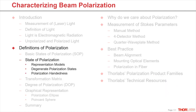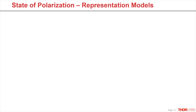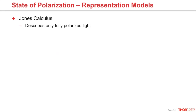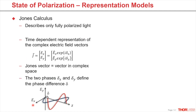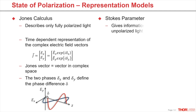Now we will look at how the state of polarization can be described in vector models. To break down the formula for the electric field over time, two methods have been established. The first is the Jones calculus, which is only applicable to light that is already fully polarized. The Jones calculus is a time-dependent representation of the complex electric field vectors. The two-dimensional Jones vector is a vector in complex space. Delta expresses the phase difference between the X and Y components of the field vector. Light which is randomly polarized, partially polarized, or incoherent must be treated using the Stokes parameters.